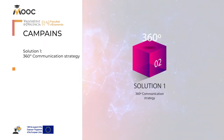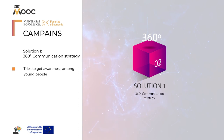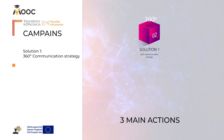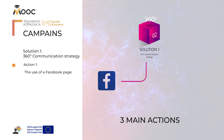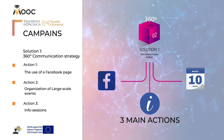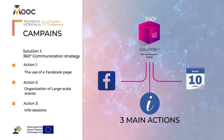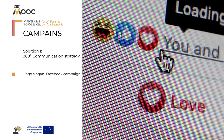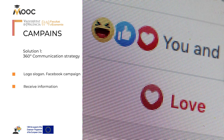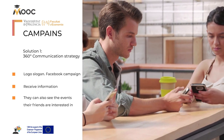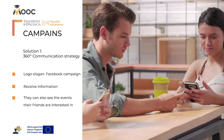The communication strategy tries to get awareness among young people. In this sense, we propose three main actions, considering that our organization has limited resources. You can see the logo and slogan we created for our Facebook campaign. This social network is used by young people to receive information of interest, and they can also see the events their friends are interested in, which magnifies their social media presence.